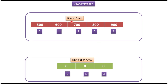Here you can see the source array which has 5 elements: 500, 600, 700, 800, and 900. And here you can see the destination array which has 3 elements: 0, 0, 0.